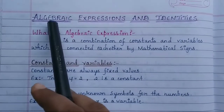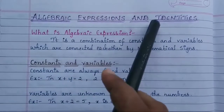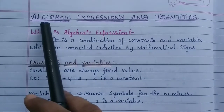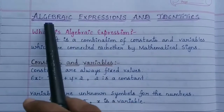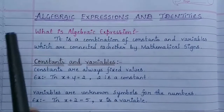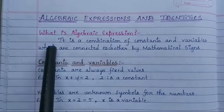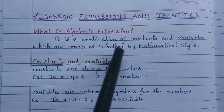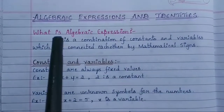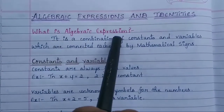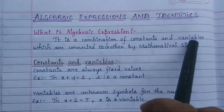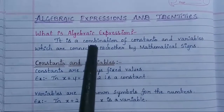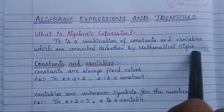Algebraic Expressions and Identities is the chapter of Class 8 Mathematics. The first thing we have to know is: what is an algebraic expression? It is the combination of constants and variables which are connected to each other by mathematical signs.